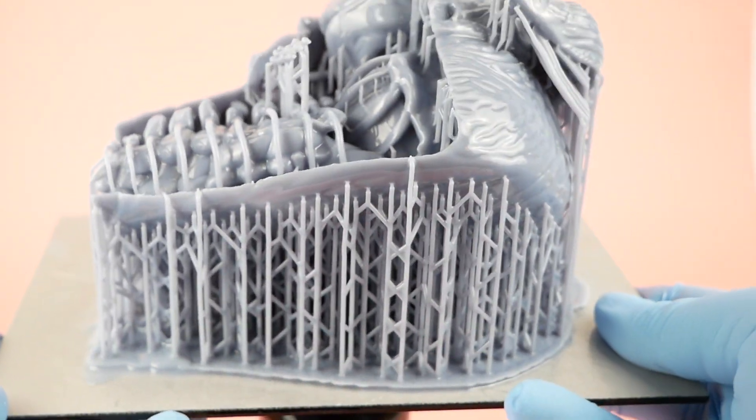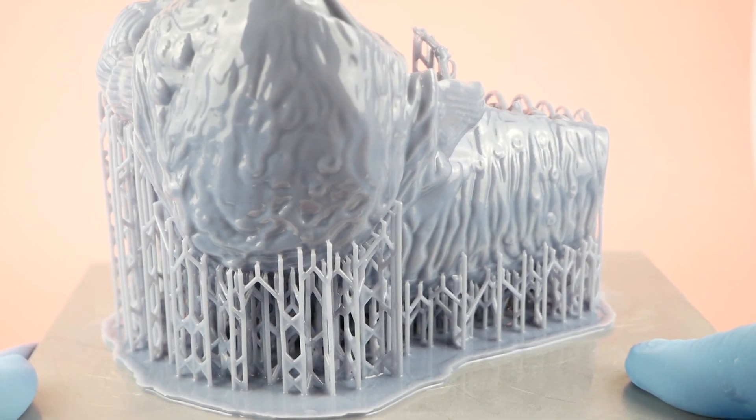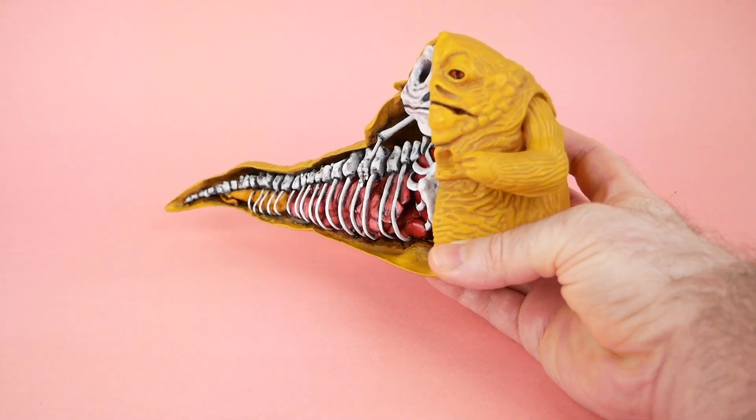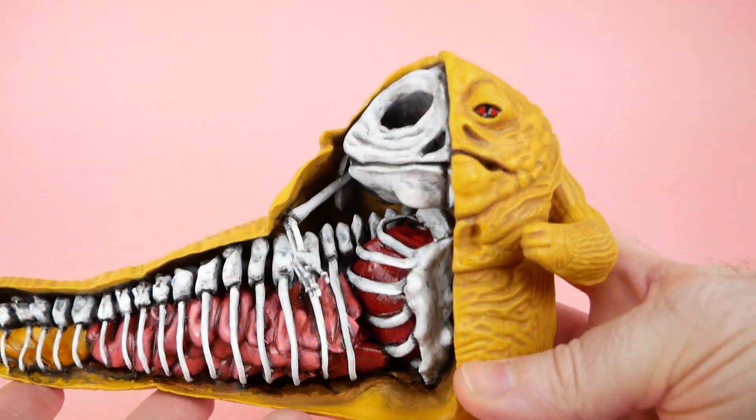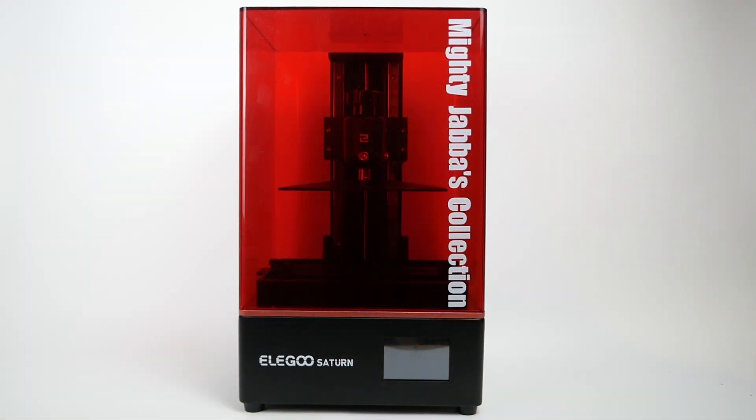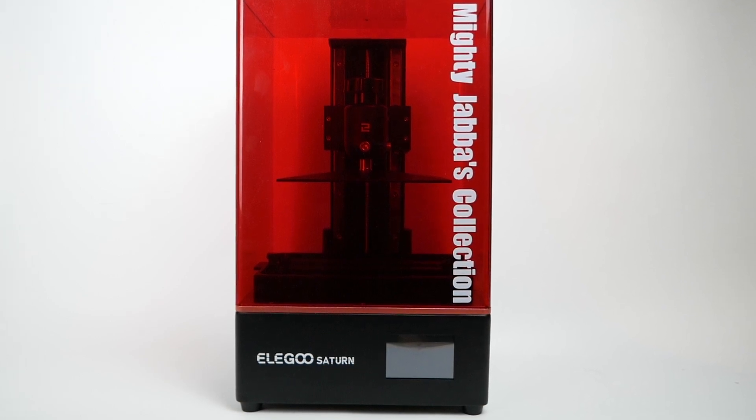More recently, I printed up this skeletal Java that I'm calling the visible Java, and although it wouldn't fit the entire figure on at once, I did have to cut off the tail, it did print out really well and yielded a finished figure like this. So I'm really happy with what I've been able to accomplish with this printer, but that doesn't mean that I haven't had some problems.